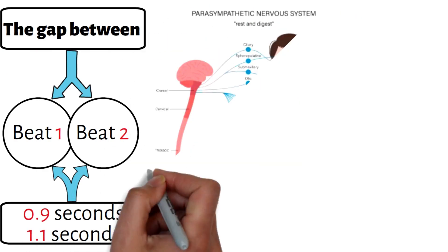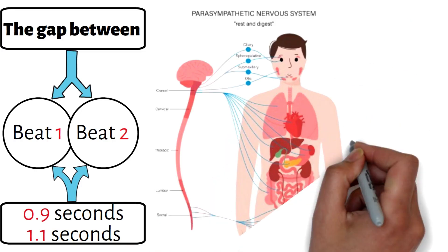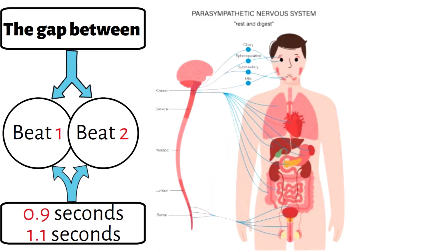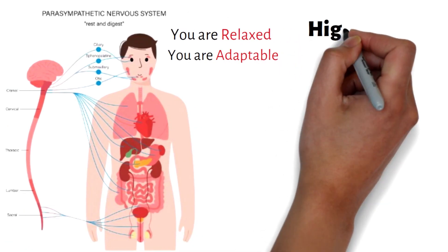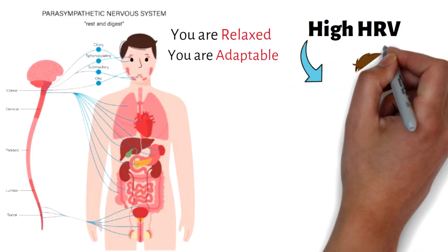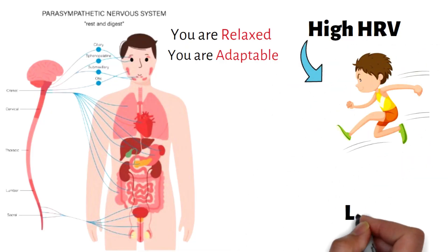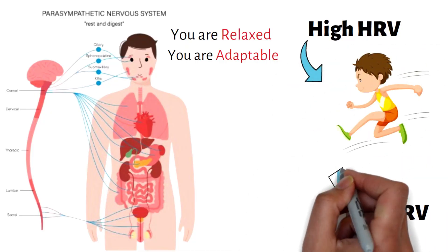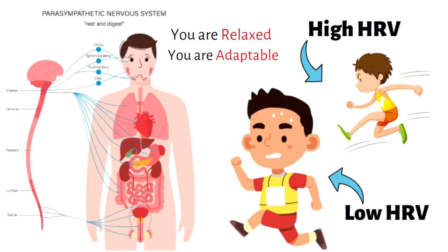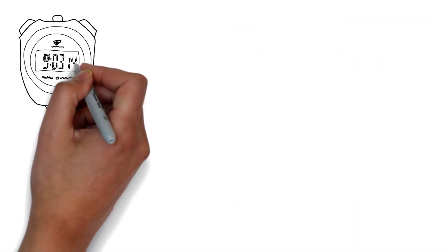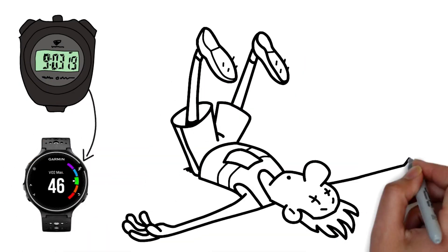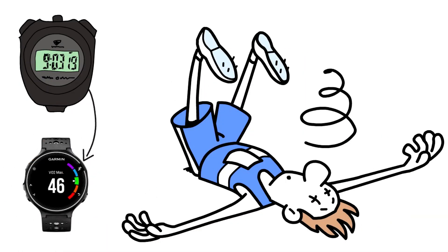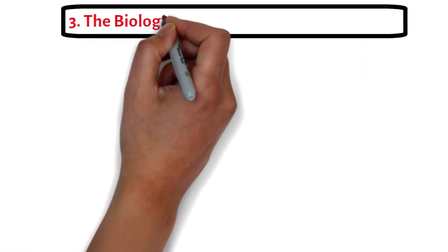This high variance means your parasympathetic nervous system—rest and digest—is in control. You are relaxed, you are adaptable. So high HRV equals good, ready to train. Low HRV equals bad, stressed, tired. This is the number your watch uses to give you that body battery score. But here's where the algorithm fails.